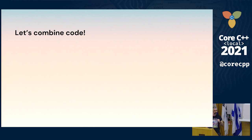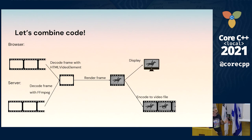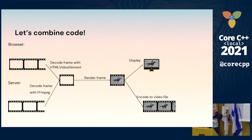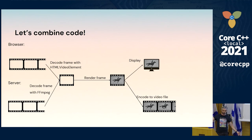So we managed to use WebAssembly and combine our code. In the browser, we decode using a video element, render a frame using OpenGL code that calls WebGL behind the scenes, and display it. Whenever the user wants to export, they send a request to the server. The server decodes each frame using FFmpeg, renders using the same OpenGL C++ code, and encodes the result to a video file. We've significantly reduced the complexity of our code. But are we happy? Not exactly.